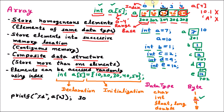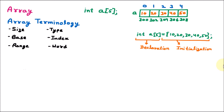Now we learn array terminology. The first term is size. When declaring the array, we provide its size inside the brackets — here, 5 is the size, meaning the array can contain a maximum of five elements. Five blocks of memory will be reserved at consecutive addresses: 300, 302, 304, 306, and 308. This is called the size of the array.